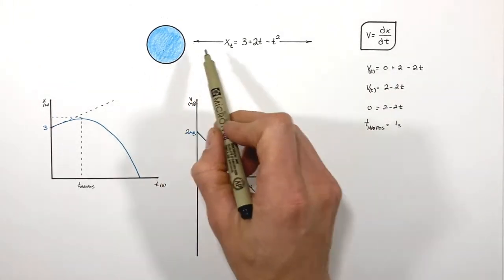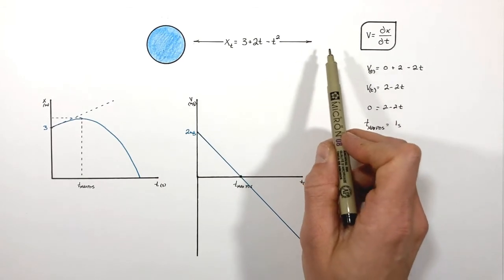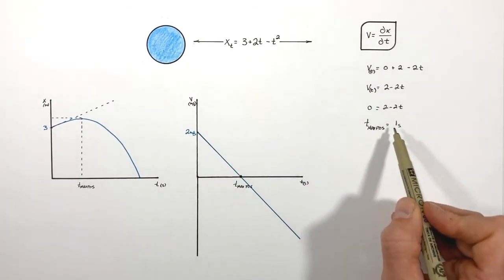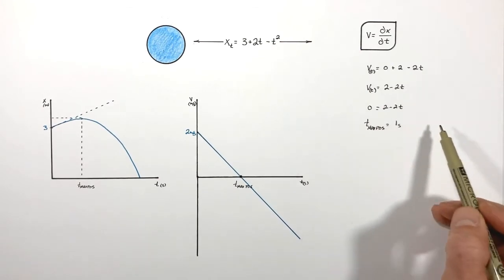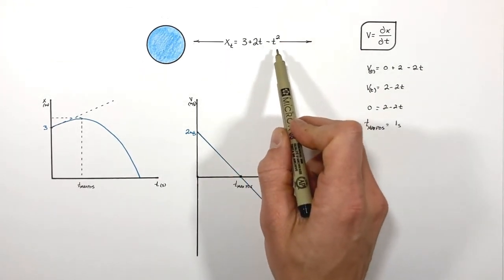Now knowing the particle reaches its maximum position after 1 second according to this equation, we can now take this time and plug it into our position versus time function.